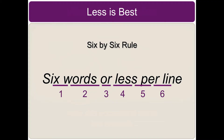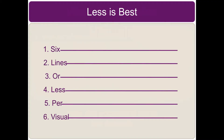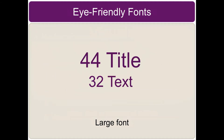The six-by-six rule means less is best: six words on a line, maybe six lines maximum on a screen. Keeping it very minimalist — six lines or less per visual, and six words across each line as a maximum.